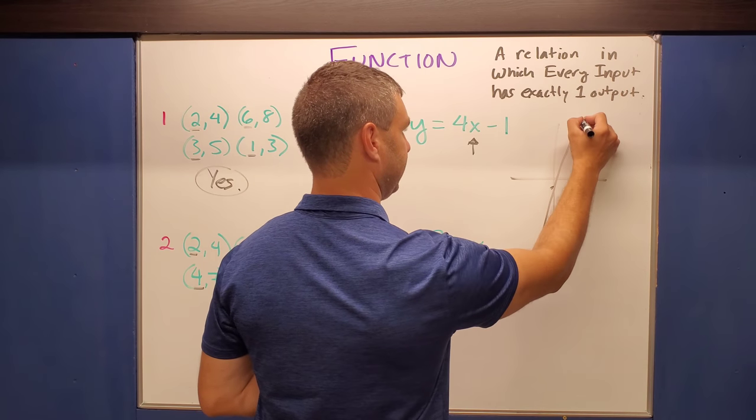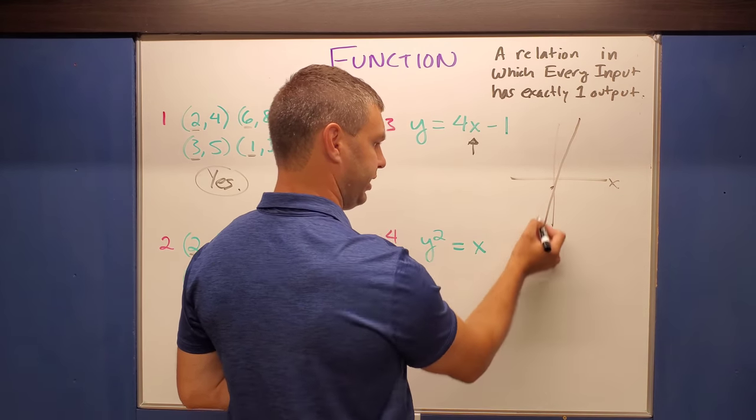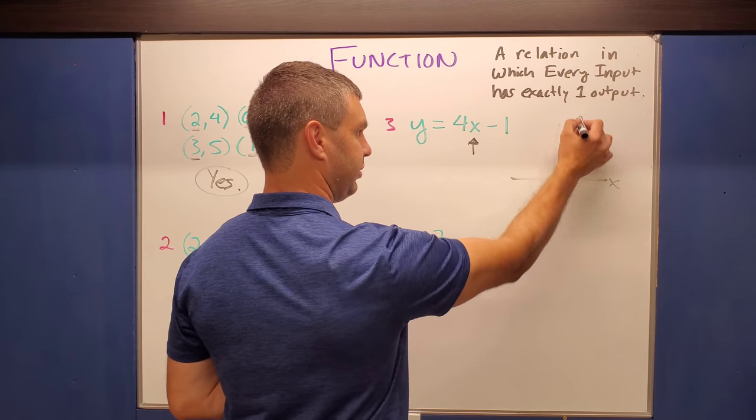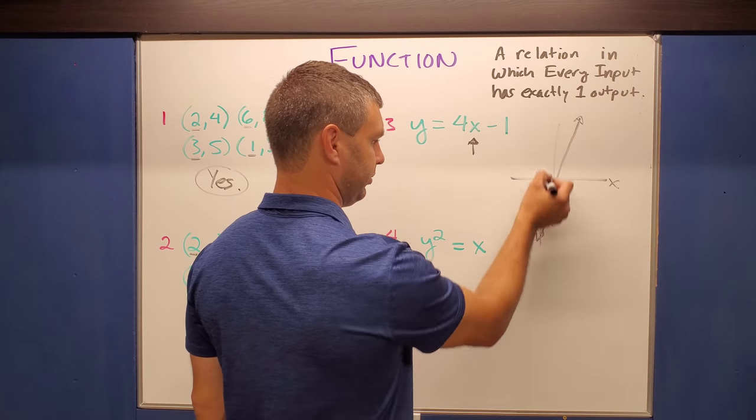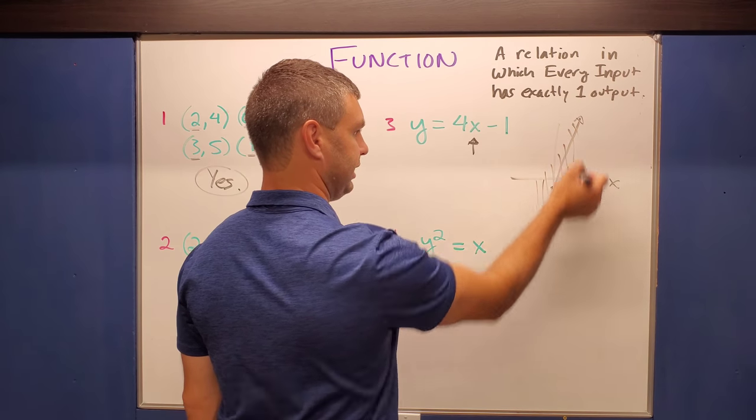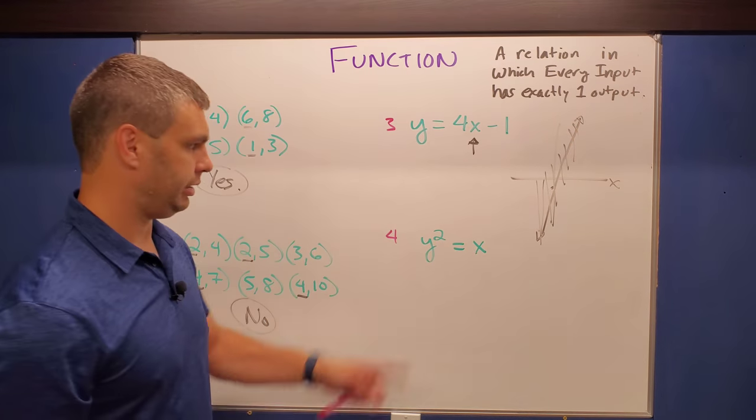There's no x value that I could put in that will give me two or more different outputs. In fact, we can use something called the vertical line test to test that out. And it does not work.